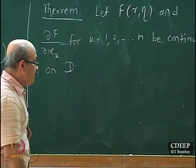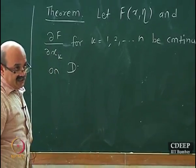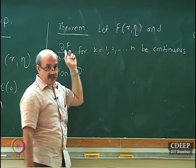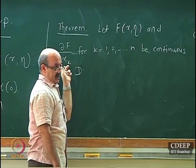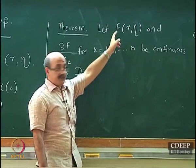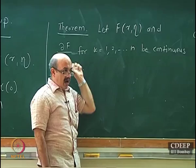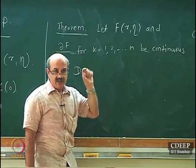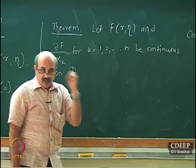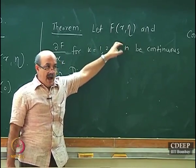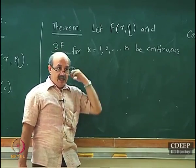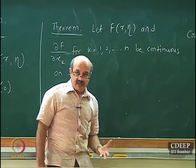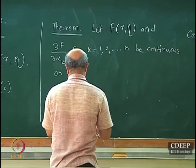This theorem gives a condition under which a unique solution exists. It says that if the function f and its first partial derivatives ∂f/∂xₖ — where f is a function vector and ∂f/∂xᵢ is also a vector — are continuous functions on the domain D that we have defined, then a unique solution exists.